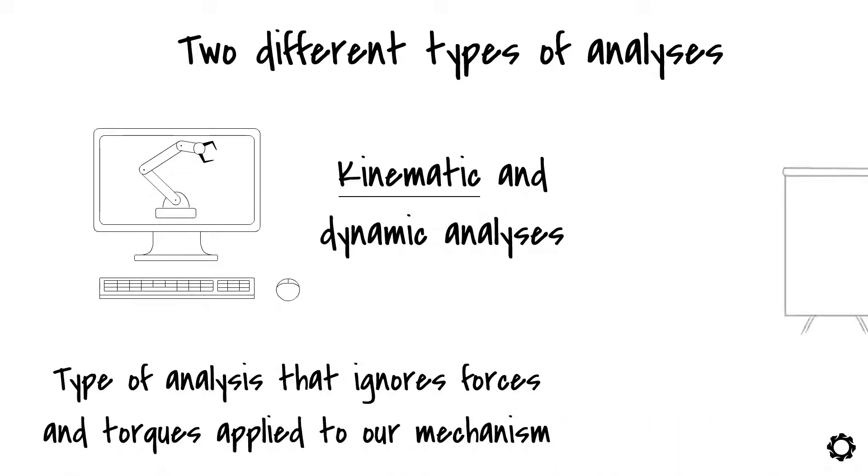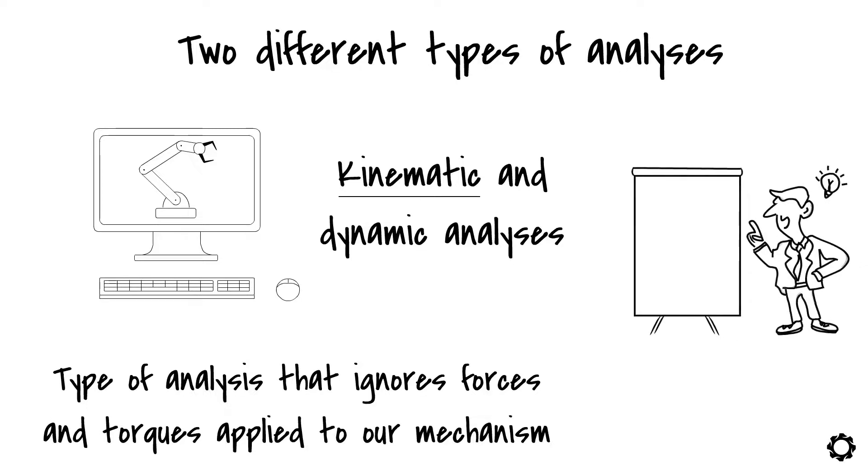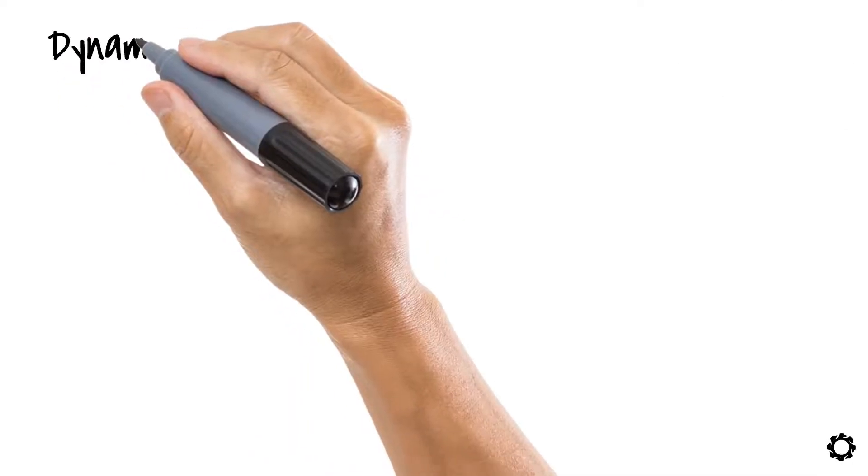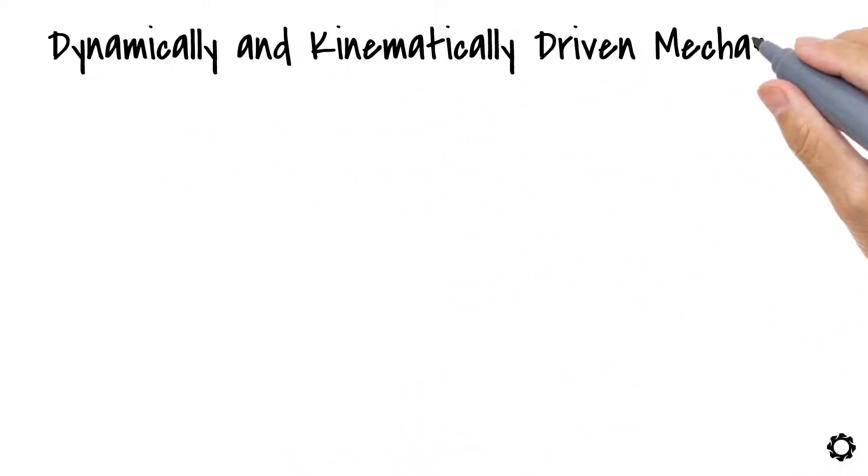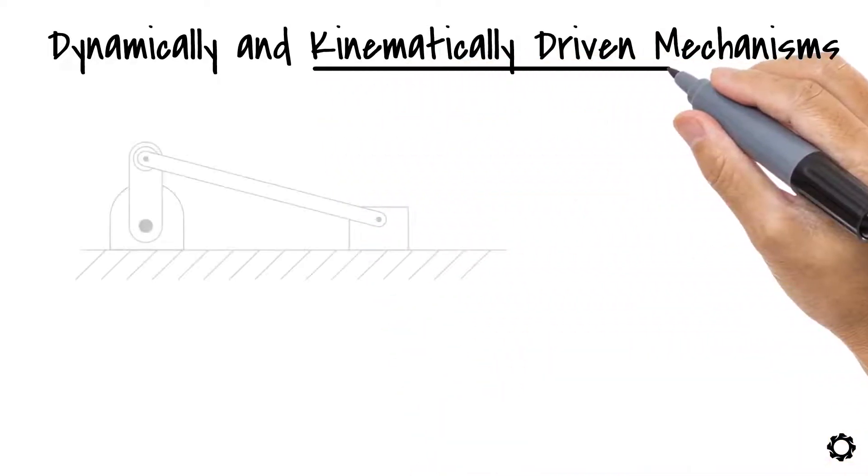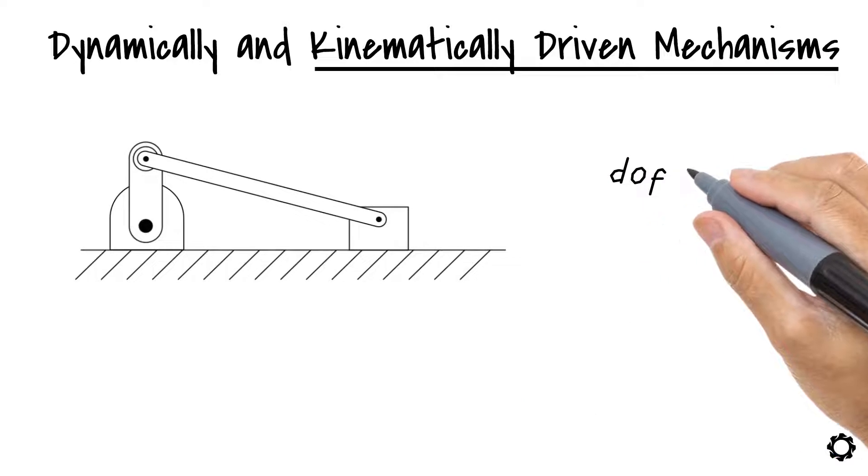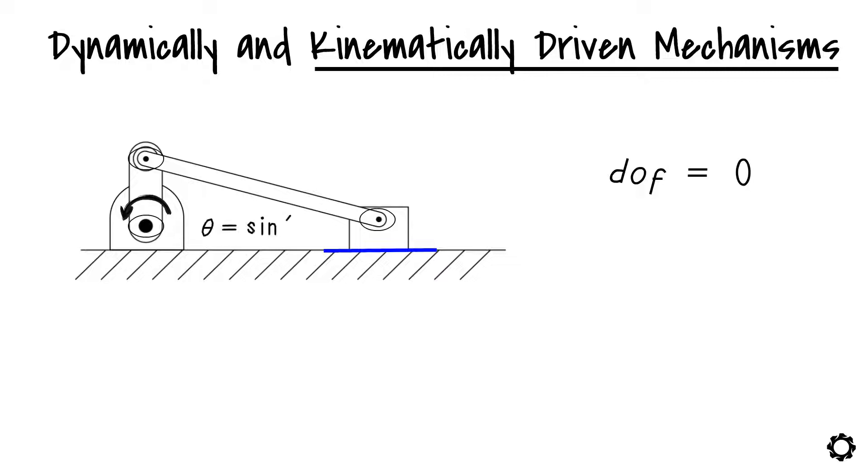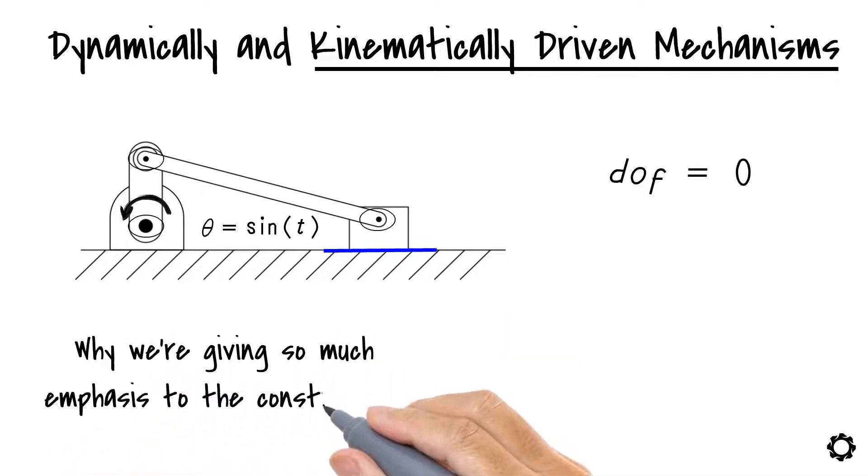It is important to bring some knowledge from one of our previous lessons where we talked about dynamically and kinematically driven mechanisms. You saw that in kinematically driven mechanisms, the total number of degrees of freedom was zero, because besides the geometric constraints, we had imposed a motion constraint. But why are we giving so much emphasis to the constraints?